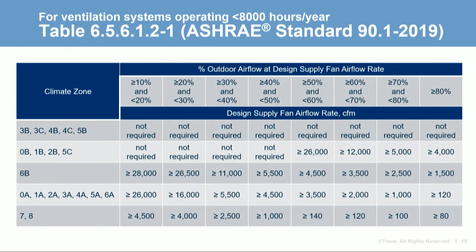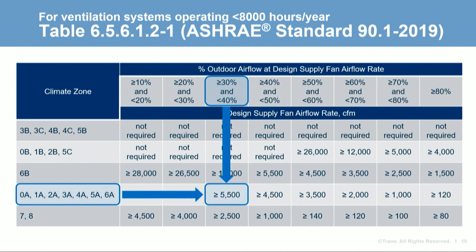To demonstrate, here's a table that applies to a system operating less than 8,000 hours per year. Consider a building in climate zone 3A: if the system is designed for 35% outdoor air, exhaust air energy recovery will be required if the design supply airflow is 5,500 CFM or larger. In general, for higher percentages of outdoor air, exhaust air energy recovery is required on smaller and smaller systems. But in mild climate zones, it may not be required at all.